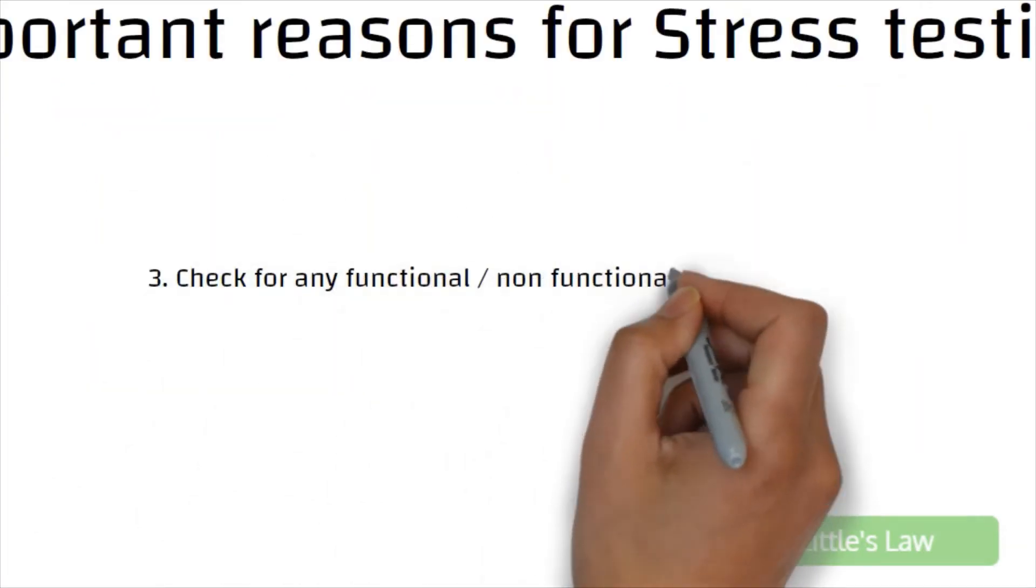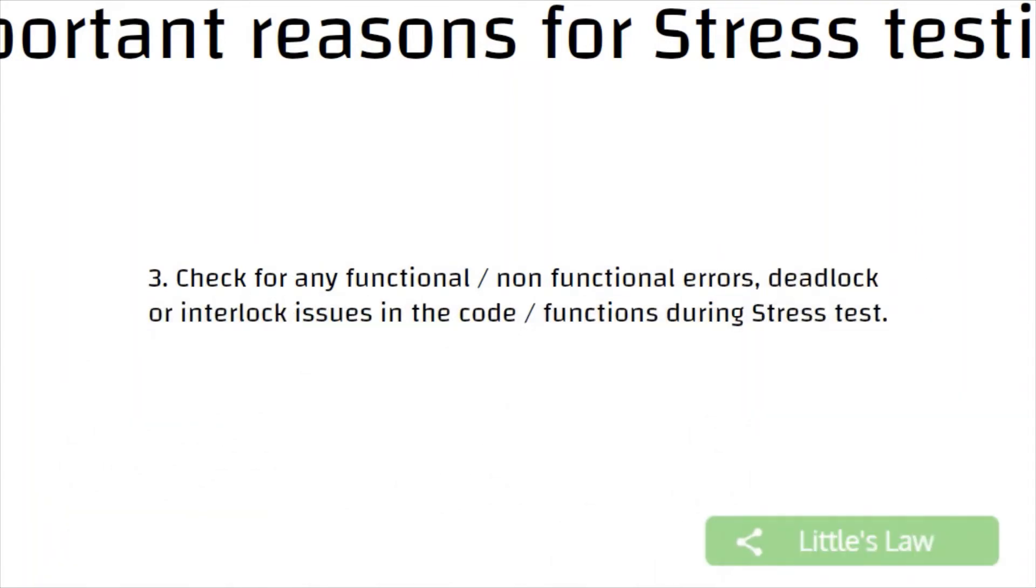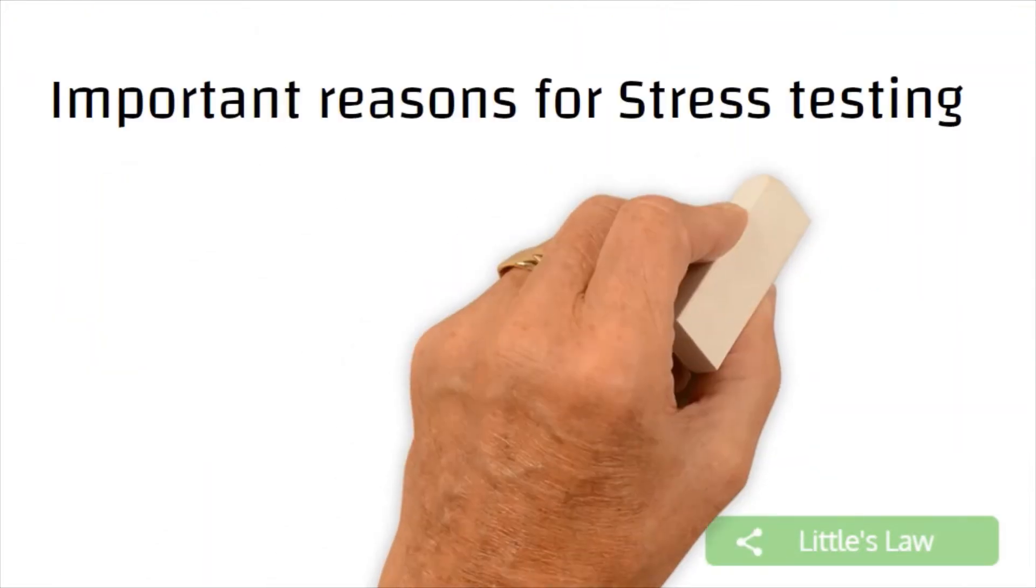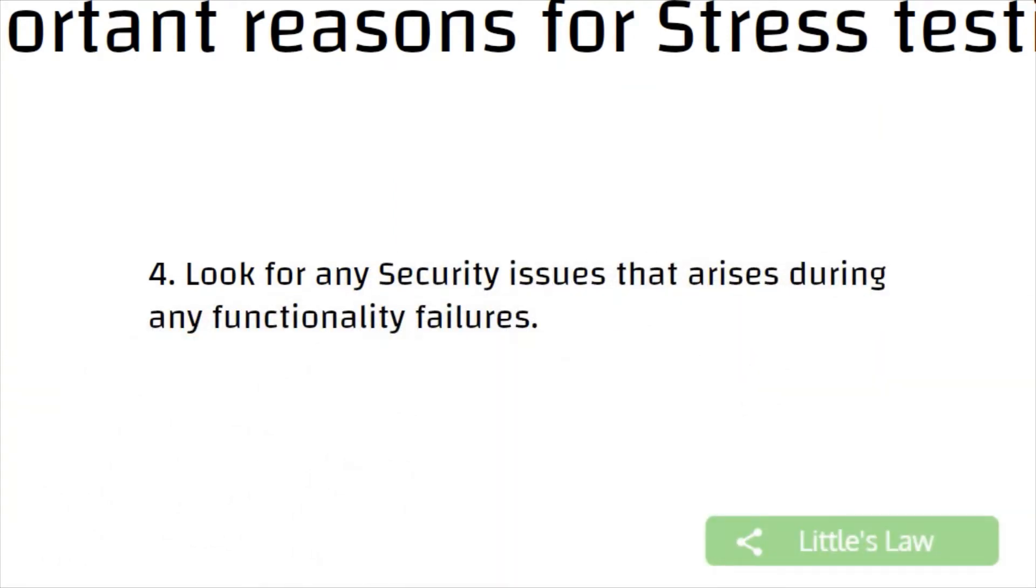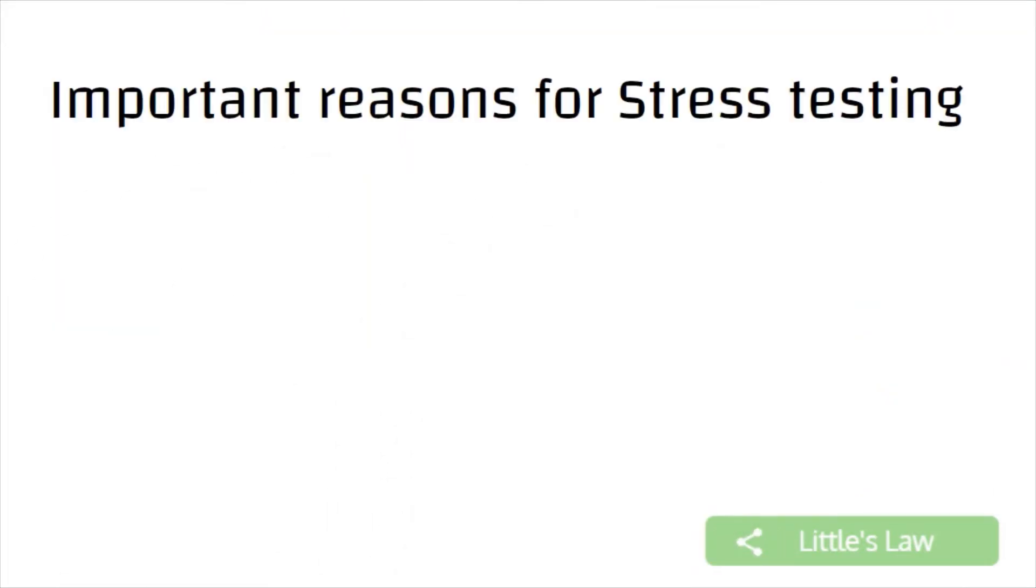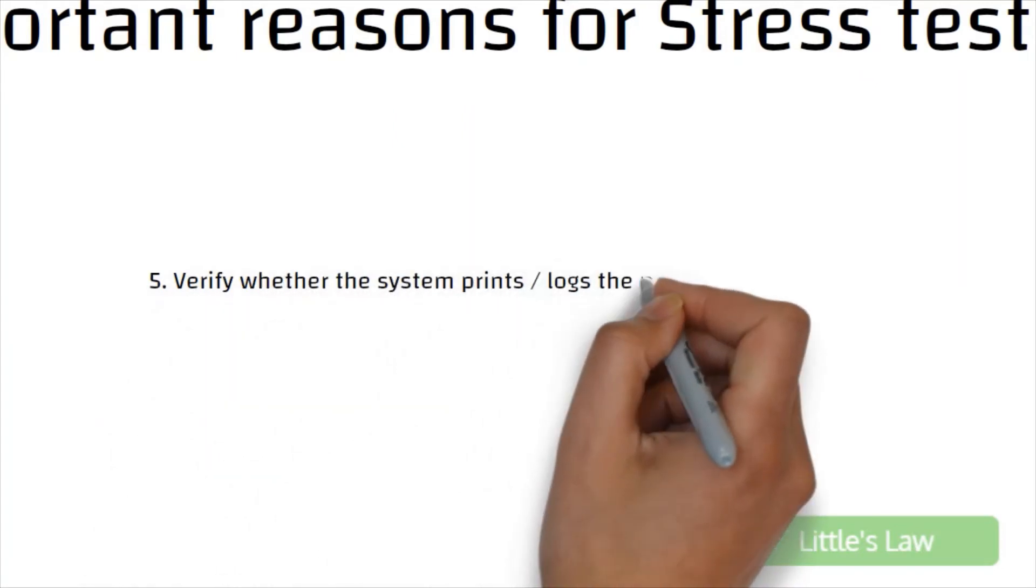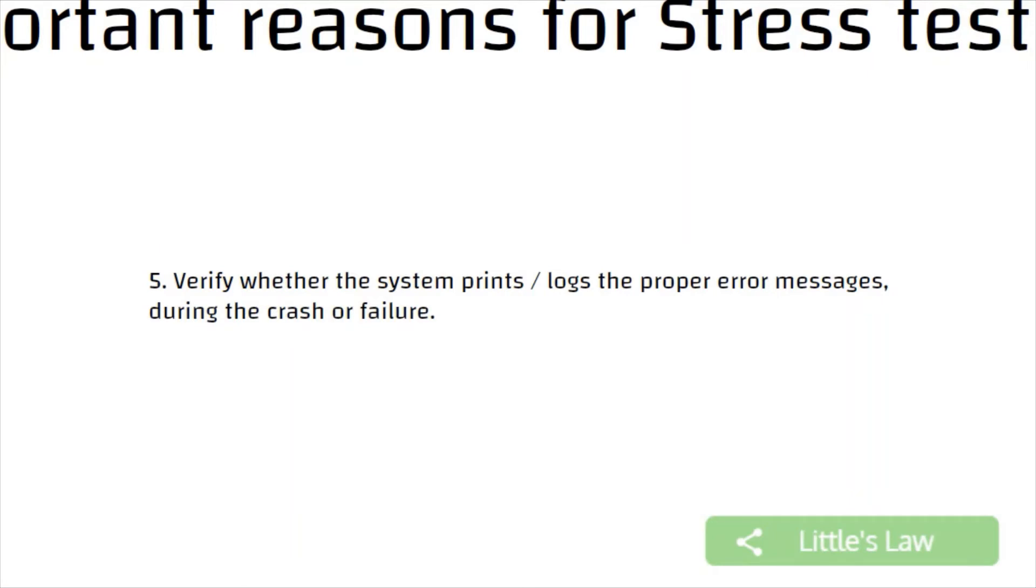Checking for any functional or non-functional errors, any deadlocks or interlock issues that happens in the code or in the functions during stress testing. Checking for any security issues that arises during any functionality failures with a very huge user load, that is during the stress test. Check whether the system prints or sends to the log the proper error messages during the crash or the failure describing about the reason of the crash or the failure and catching the exceptions during the stress test.